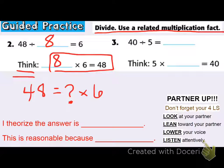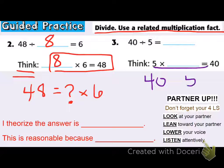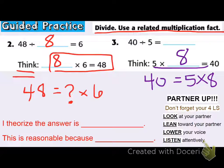Moving on to problem number three — this time we're looking at the fact family of 40. I know 40 is five times eight, so I can go ahead and fill eight in here. By thinking about that fact family, five times eight is 40, so that must mean that 40 divided by five is eight. And I know I have the right answer because if I put 40 into five equal groups, there will be eight in each group. That fact family helped me solve this problem.